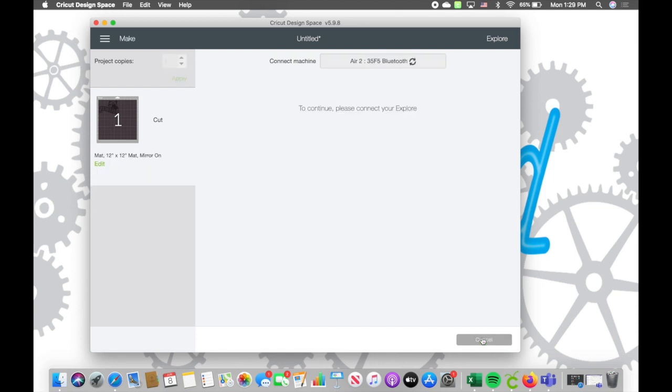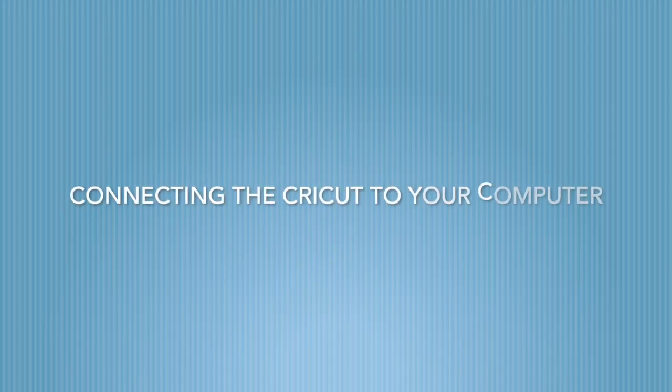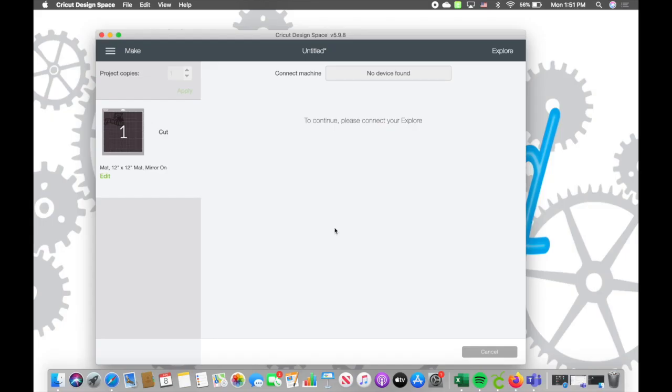You're just going to hit continue, and then you're going to want to make sure that your machine is connected. If you have already connected your Cricut to your computer, your device should show up here. You just want to make sure that the Cricut is on and it should appear here.